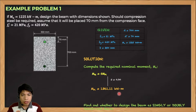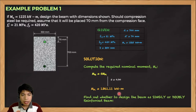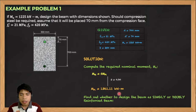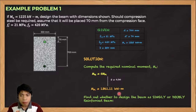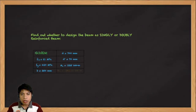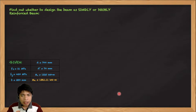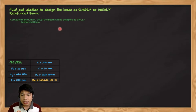After computing M_N, we determine whether to design the beam as singly or doubly reinforced. We prefer singly because it is more economical. To find out, we compute the maximum nominal moment MN1 — the capacity if designed as singly reinforced. We set ρ₁ = ρ_max, which corresponds to a tension strain of 0.005, and solve for AS1 = AS_max, the maximum tension steel area for a singly reinforced beam.